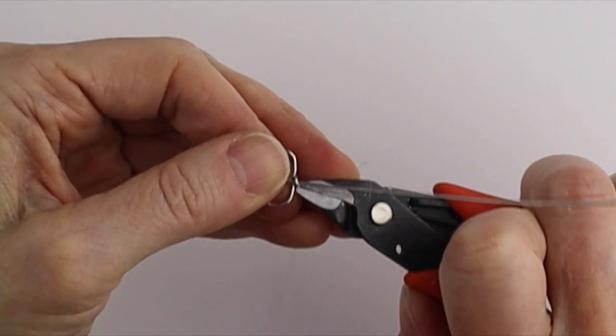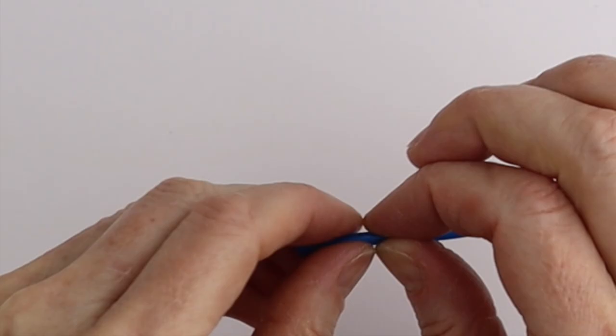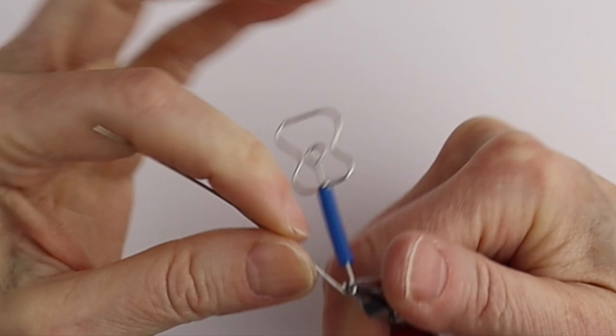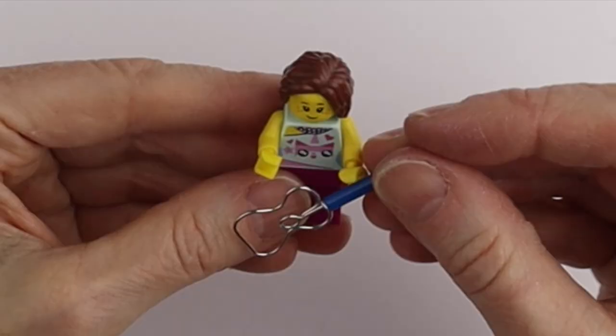Decide how long you want the neck of the guitar to be, clip it off, put that one on there, and just form the end of the guitar. Twist it around, clip it, and then you can just stick the guitar right in her hand.